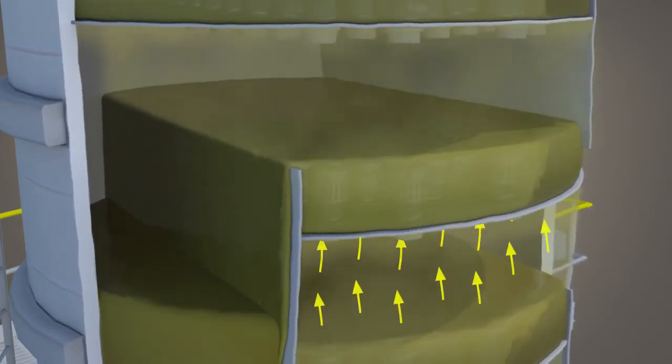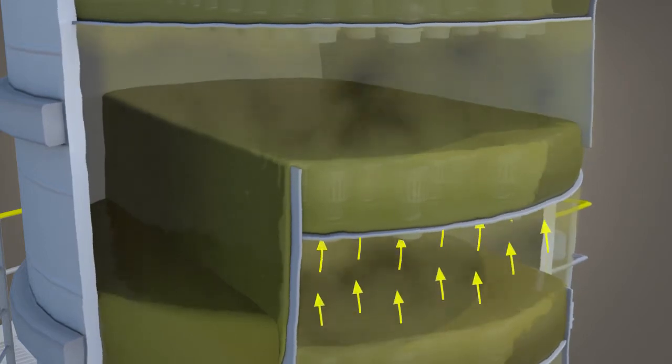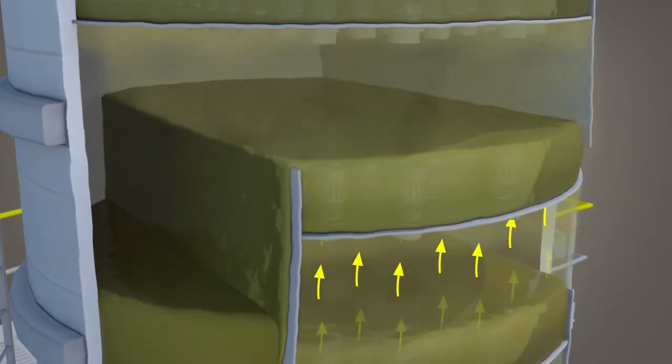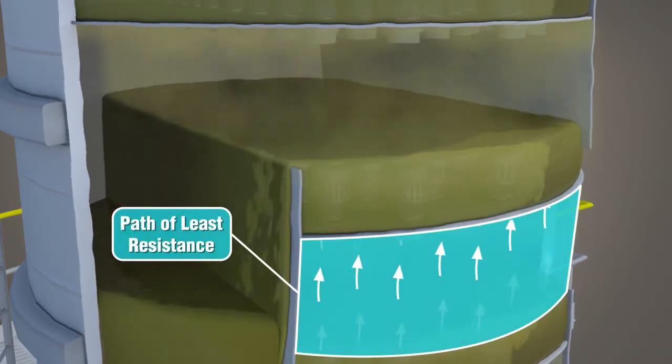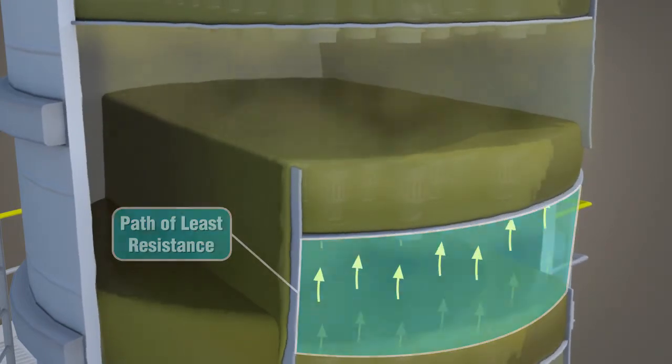Liquid accumulating at the bottom of the downcomer seals off the potential path of the vapor through the downcomer. Because the liquid height on the tray is lower than the liquid height in the bottom of the downcomer, the vapor follows the path of least resistance up through the bubble cap and into the surrounding liquid.